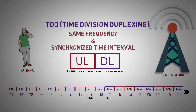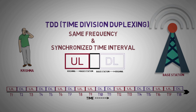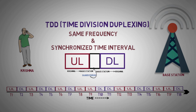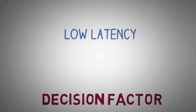Since the transmission periods are relatively short, no time delay is noticed on voice transmission. Between time slots there are certain guard periods so that signals traveling from base stations can arrive at Krishna before Krishna starts transmitting.